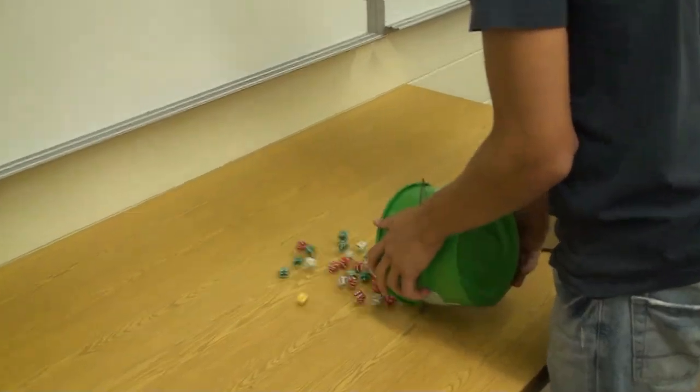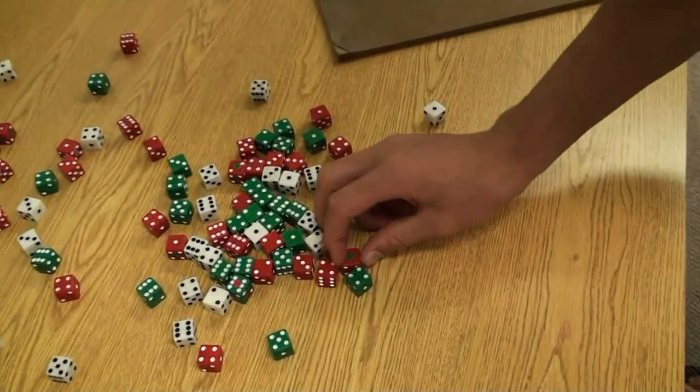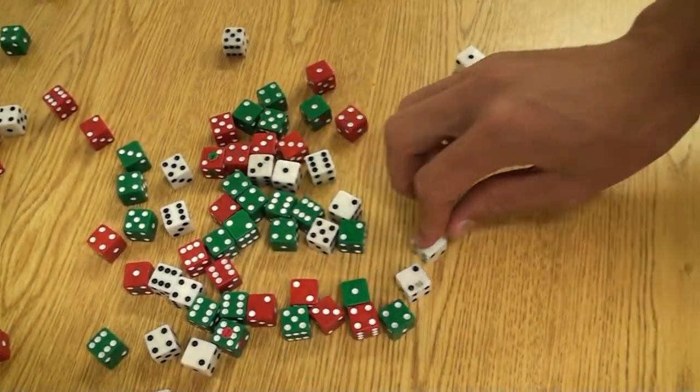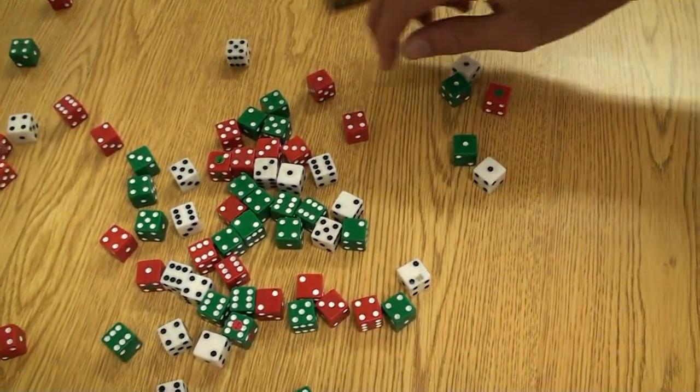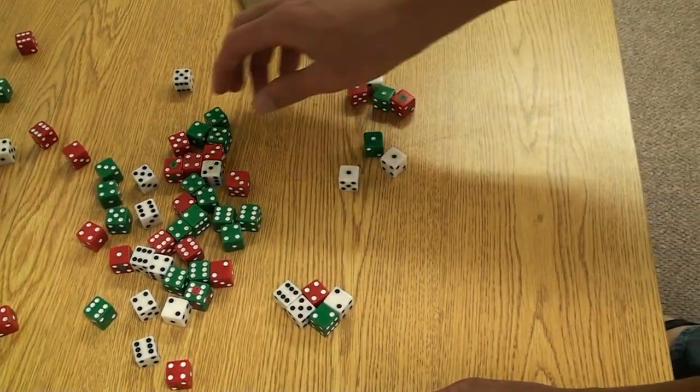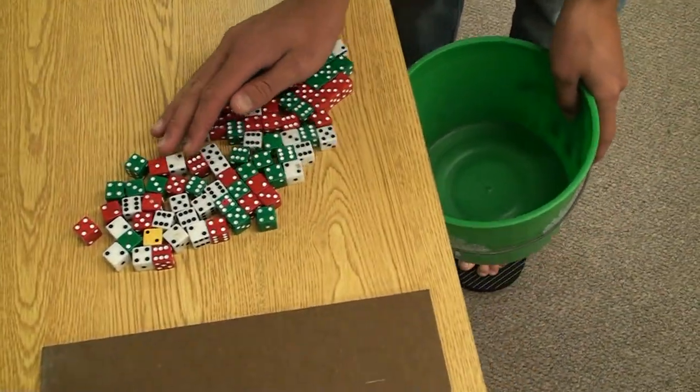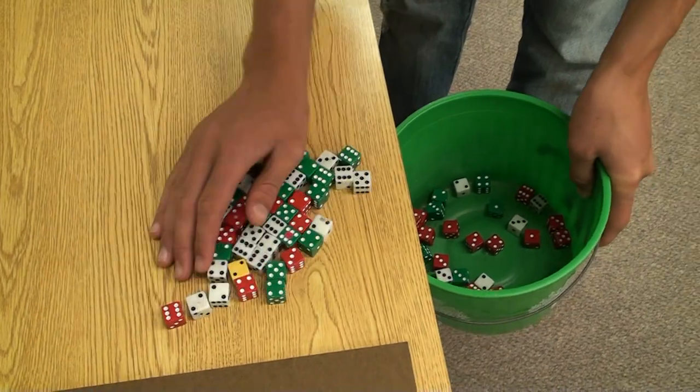For the dice, we remove all the dice that come up with a single dot. Determine how many are left and roll those dice. Repeat until only a few dice are left.